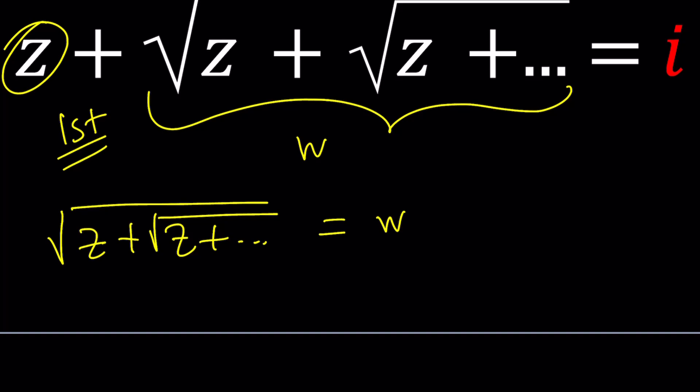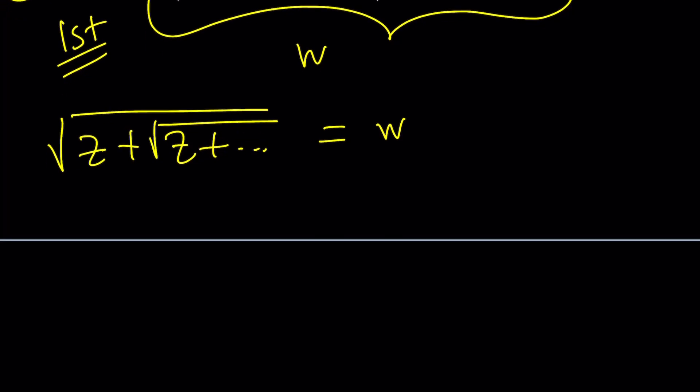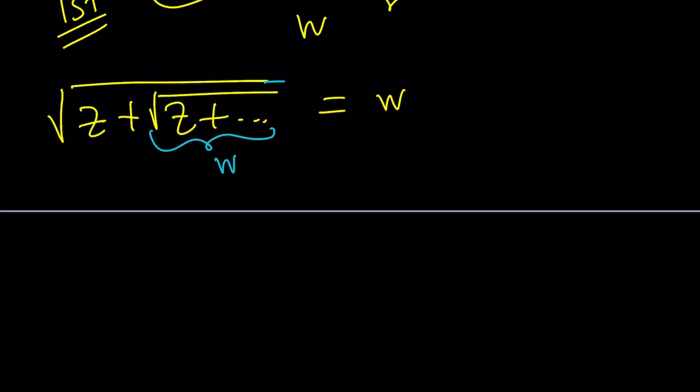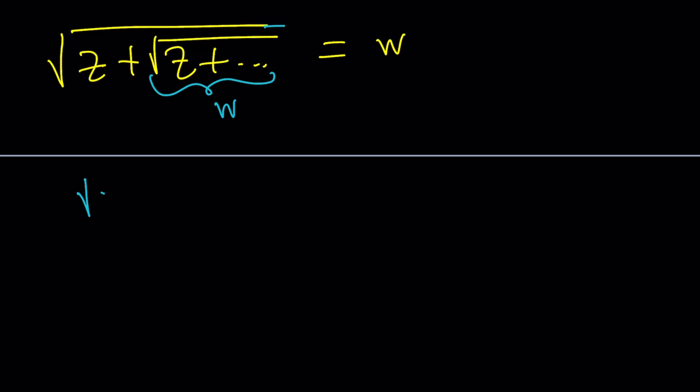So that implies two things. First of all, we said that this expression includes itself many times and I set it equal to W. So we didn't have a radical only, but now we kind of isolated it. And notice that this is the same thing as W, right? Because this expression contains itself. So from here we get the following: square root of Z plus W equals W.